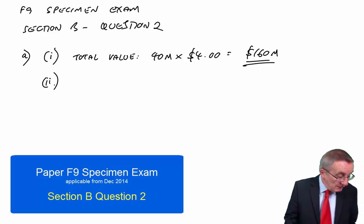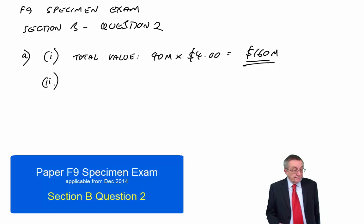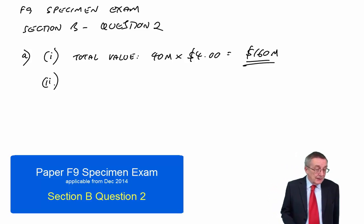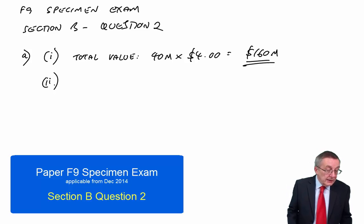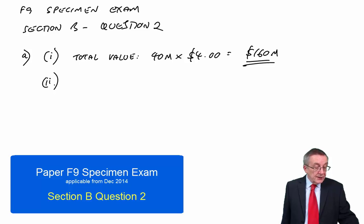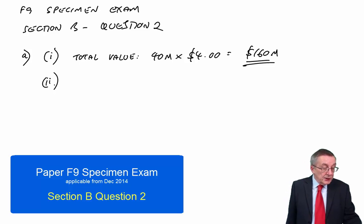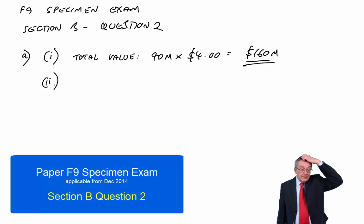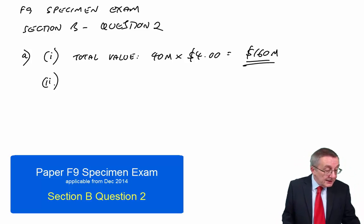What about number two? Net asset value. Means what it says. The value of the net assets. On a liquidation basis. Look at the second block beneath the statement. The expected net realisable values of the non-current assets and inventory are boom, boom. In the event of liquidation, only 80% of the receivables are expected to be collectible. Well, let's just list those values of the net assets.